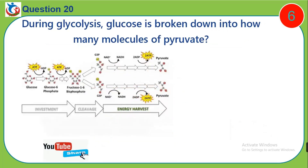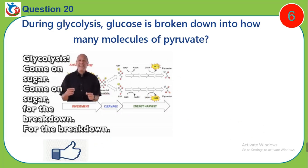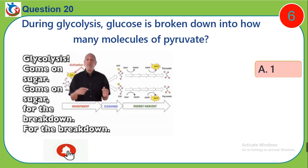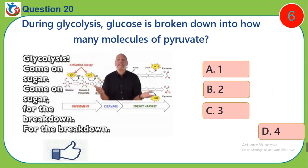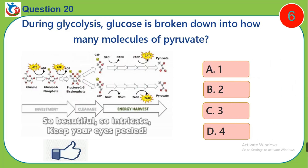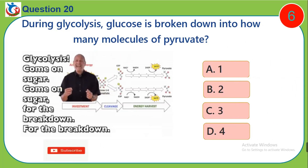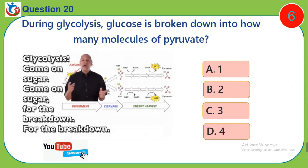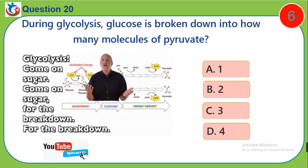Question 20. During glycolysis, glucose is broken down into how many molecules of pyruvate? A, 1. B, 2. C, 3. D, 4.